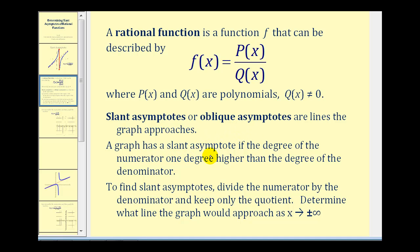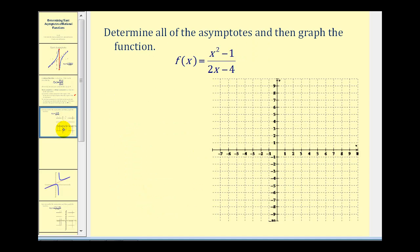A graph has a slant asymptote if the degree of the numerator is one degree higher than the degree of the denominator. If it satisfies this condition, to find the slant asymptote we divide the numerator by the denominator and determine what line the graph approaches as x approaches positive or negative infinity. The equation of the line comes from only the quotient part of our answer — we disregard the remainder.